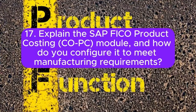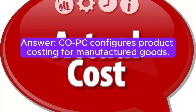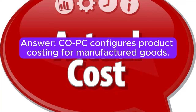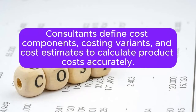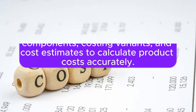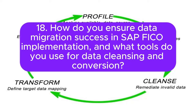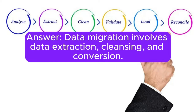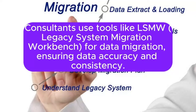Question 17: Explain the SAP FICO Product Costing (CO-PC) module, and how do you configure it to meet manufacturing requirements? CO-PC configures product costing for manufactured goods. Consultants define cost components, costing variant estimates, and cost estimates to calculate product costs accurately. Question 18: How do you ensure data migration success in SAP FICO implementation, and what tools do you use for data cleansing and conversion? Data migration involves data extraction, cleansing, and conversion. Consultants use tools like LSMW (Legacy System Migration Workbench) for data migration, ensuring data accuracy and consistency.